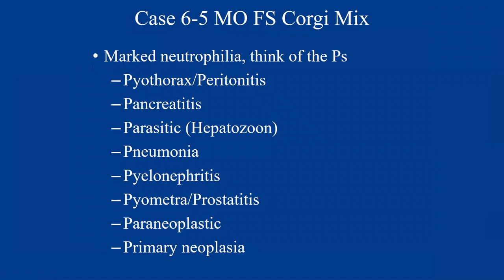When I see marked neutrophilias, think of the P's — pyothorax, peritonitis (septic or non-septic), pancreatitis, parasitic (specifically hepatozoon), pneumonia, pyelonephritis, pyometra, prostatitis, paraneoplastic response, or primary neoplasia. Primary neoplasia is a diagnosis of exclusion, so you have to kind of rule out all the other stuff. This is not an all-inclusive list, but if you think of the P's, it helps with your diagnostic algorithm. There was certainly concern for pyometra in this patient. Other chemistry findings: low albumin, increased globulins, mild elevation in alkaline phosphatase, and mild to moderate elevation in CK indicating some degree of muscle injury.